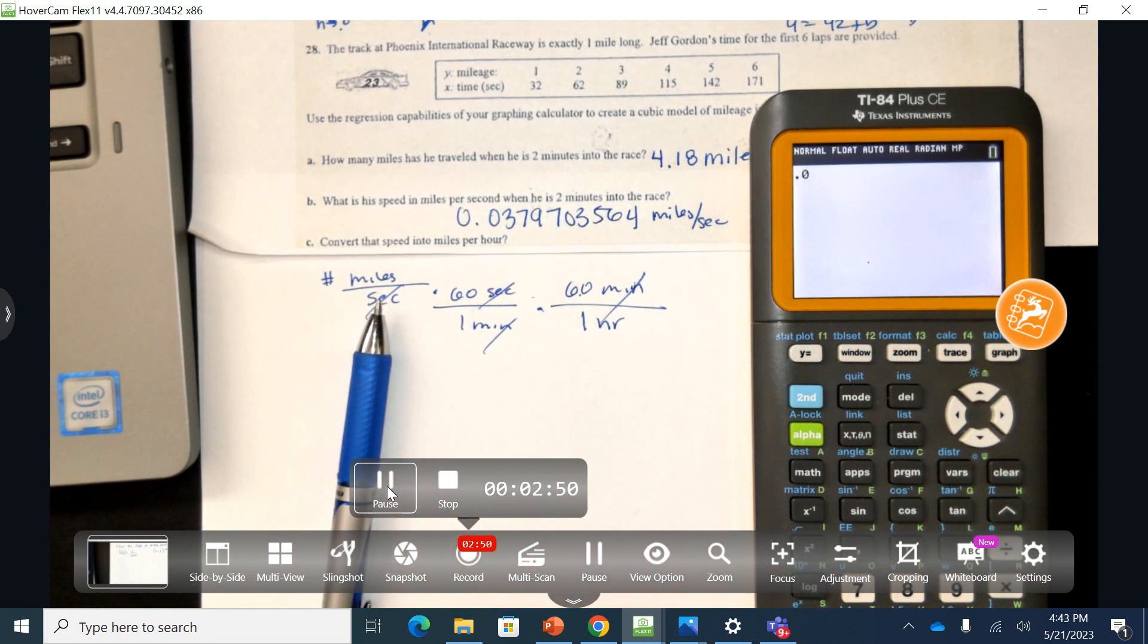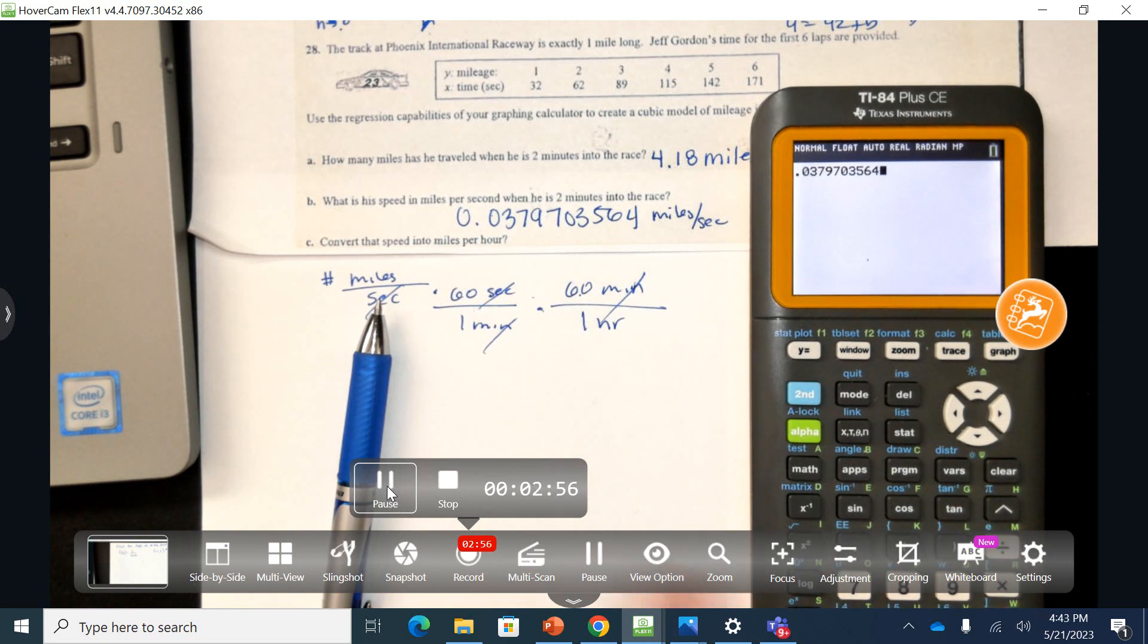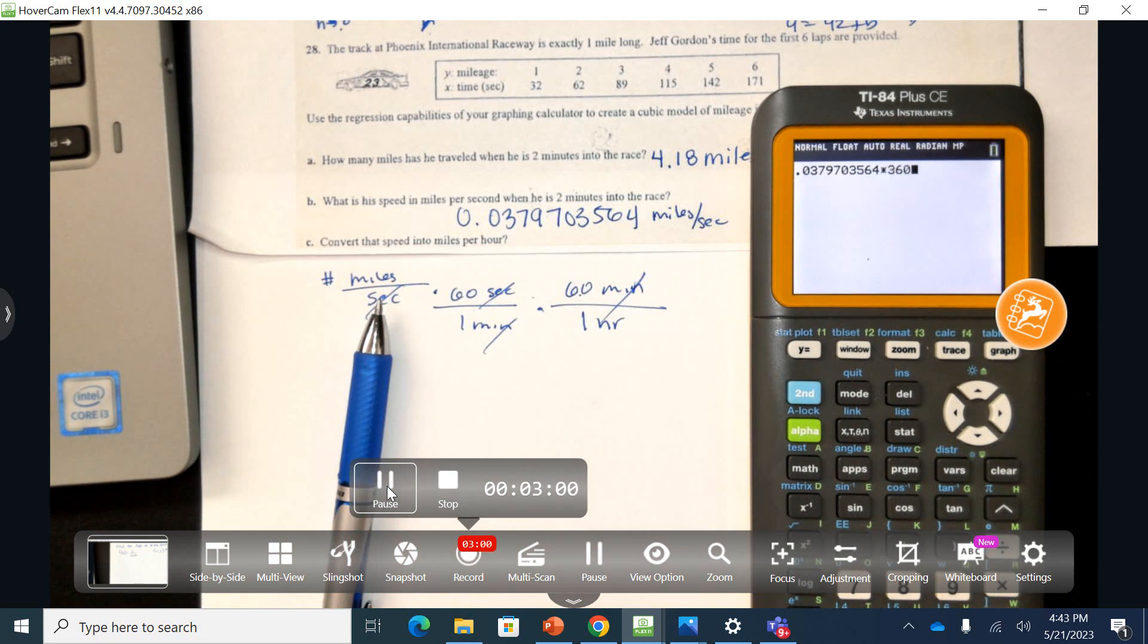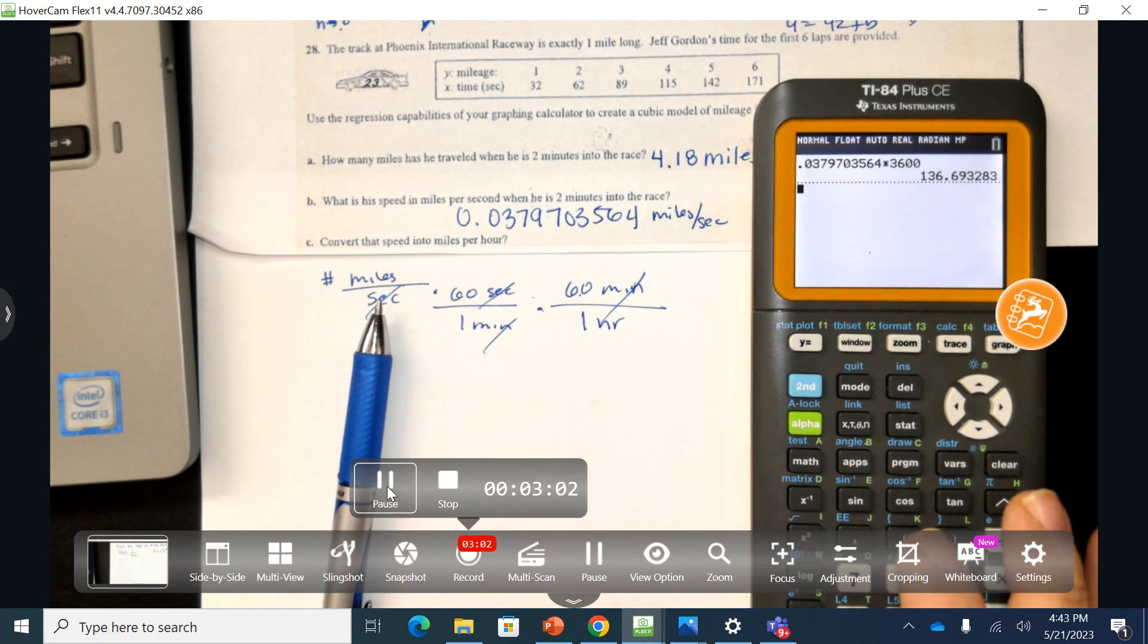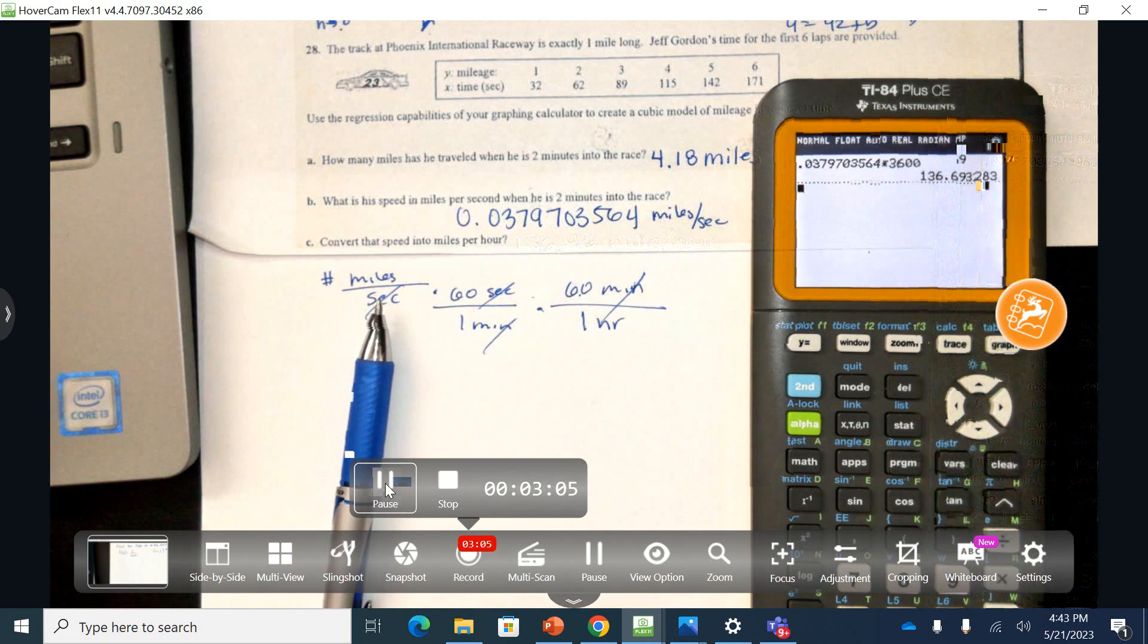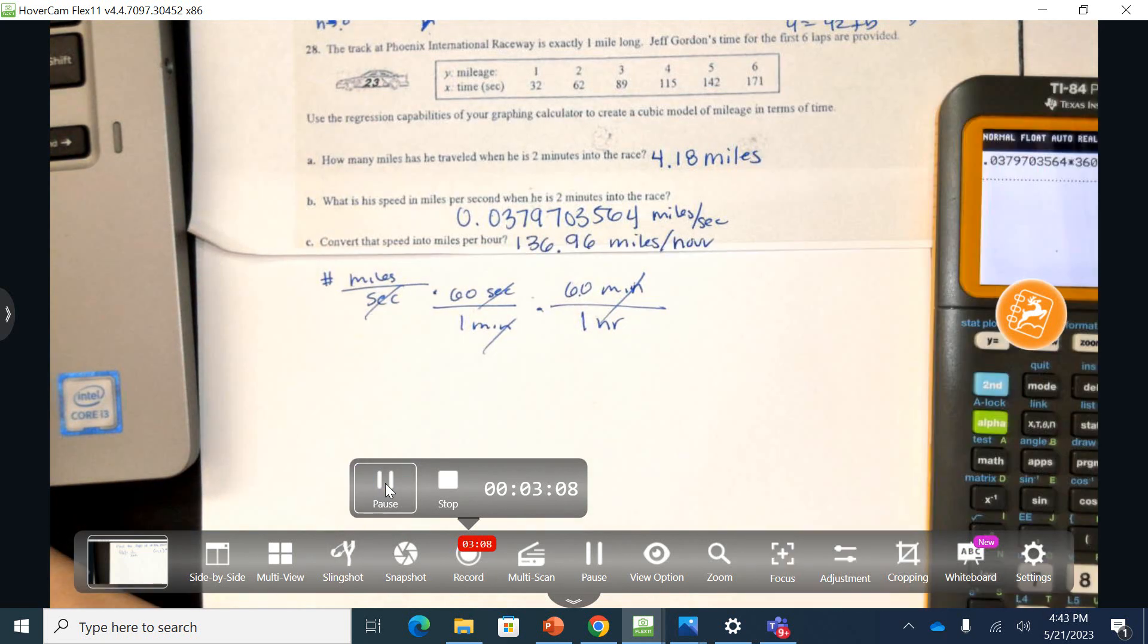0.03, 7970. So that's this quantity that we write here times 60 times 60, or times 3,600. And there is my answer. My answer is 136.96 miles per hour.